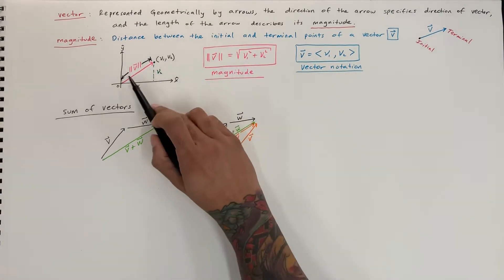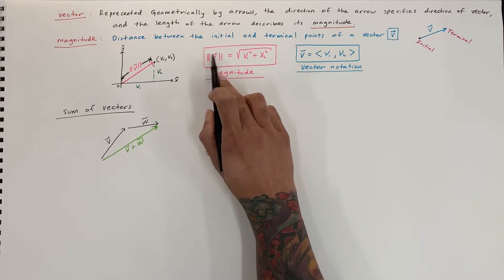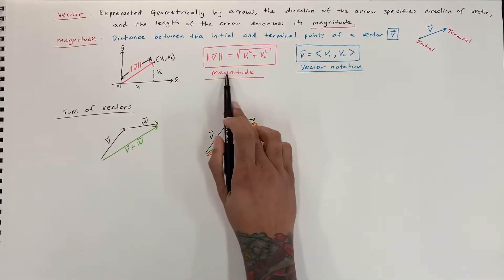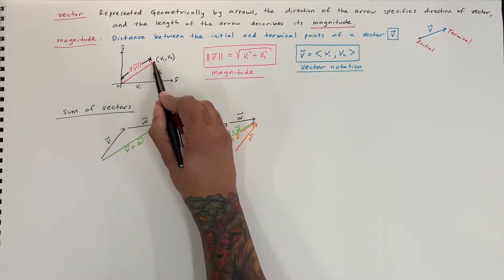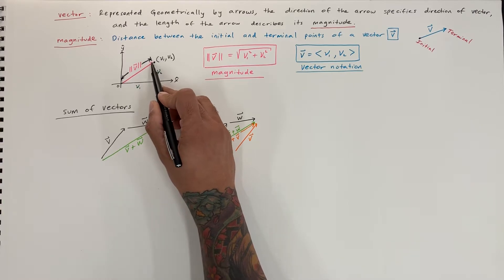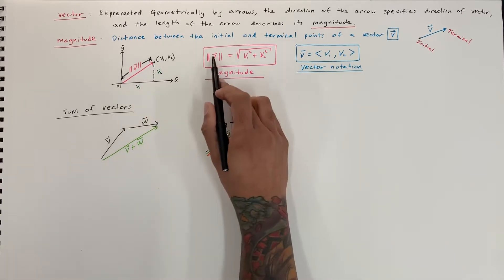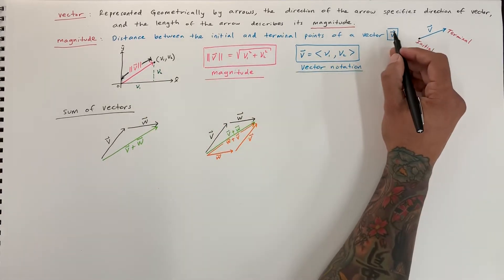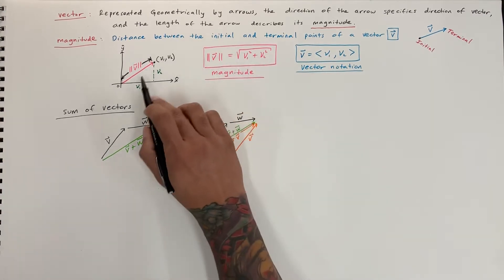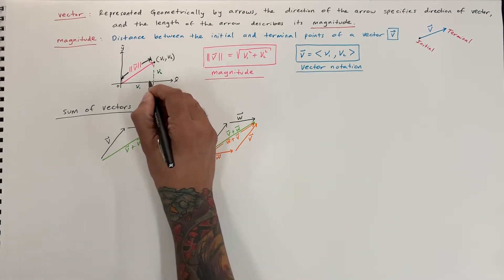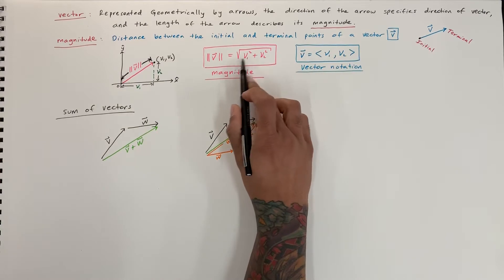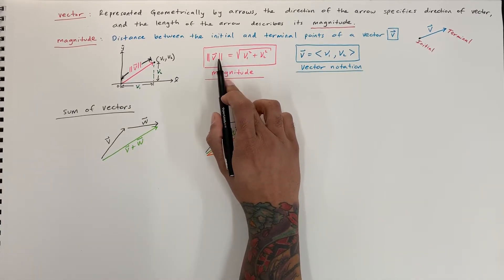Here we have a y and x coordinate system. Mathematically, the magnitude is represented like this: we have this vector here in pink, and the magnitude — the distance from the initial to the terminal point — is represented using vector notation with a little line on top. It equals the square root of v1 squared — the length of the bottom side — plus v2 squared. It's similar to the Pythagorean theorem.